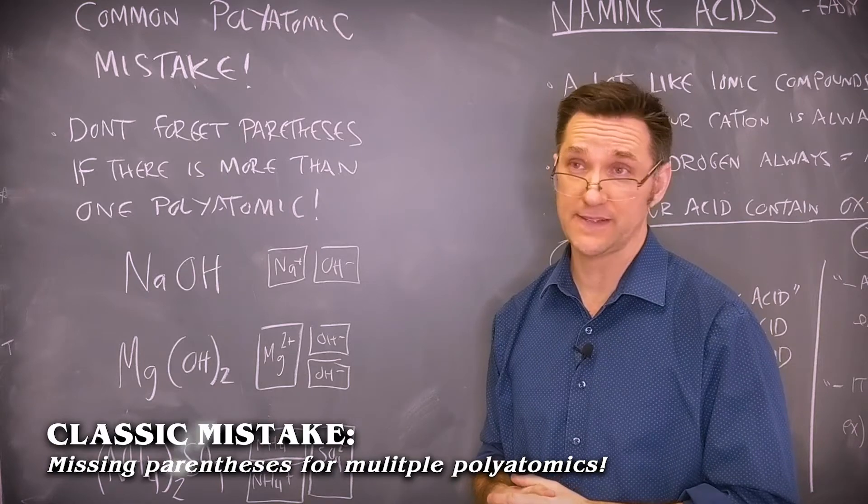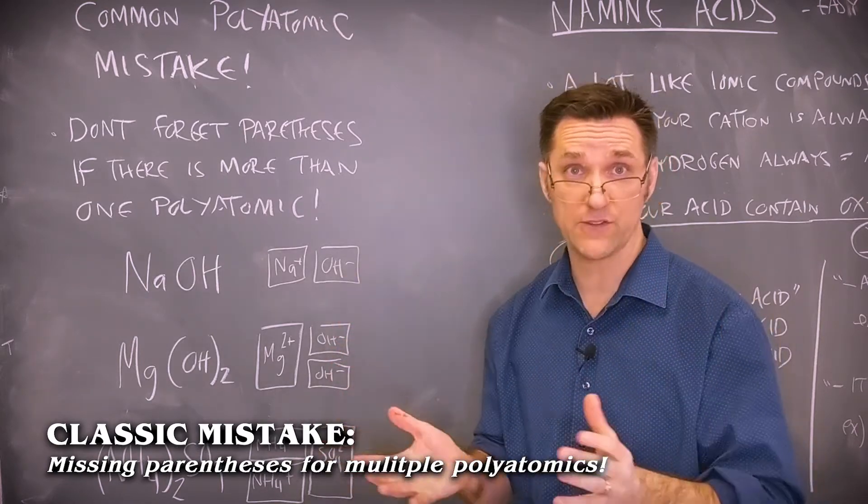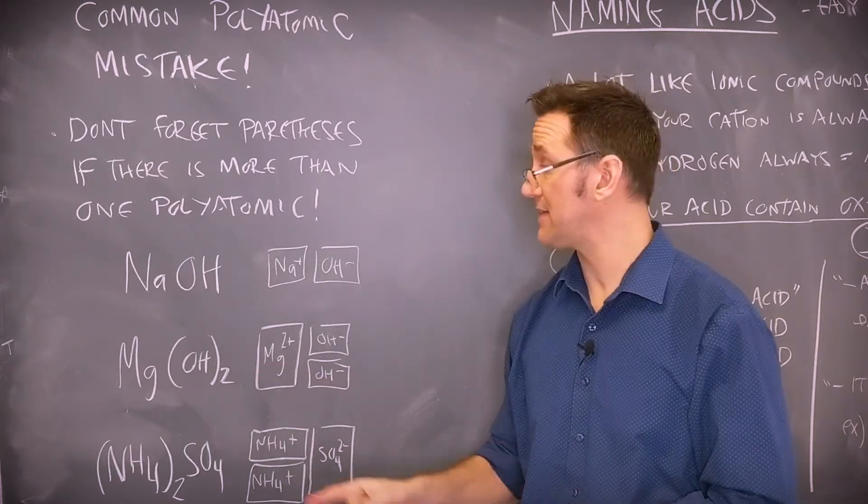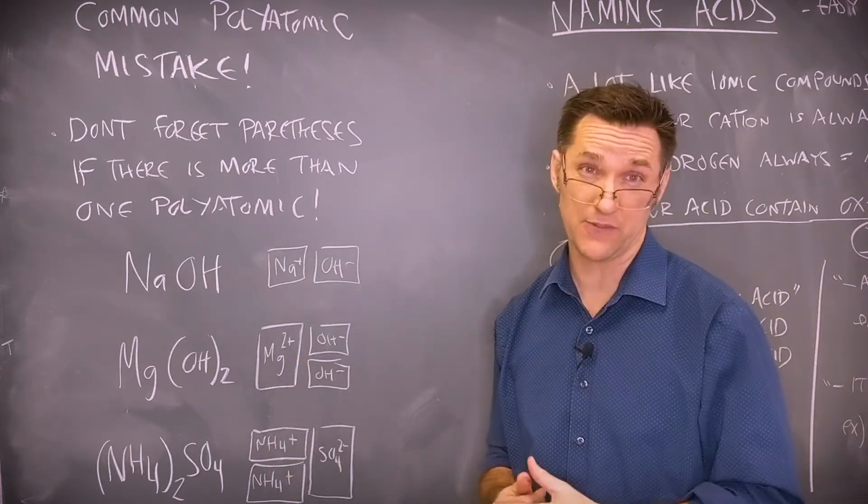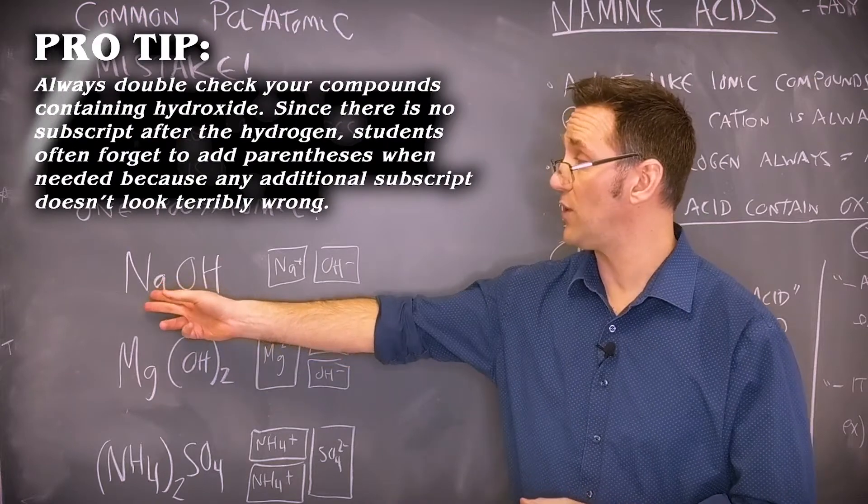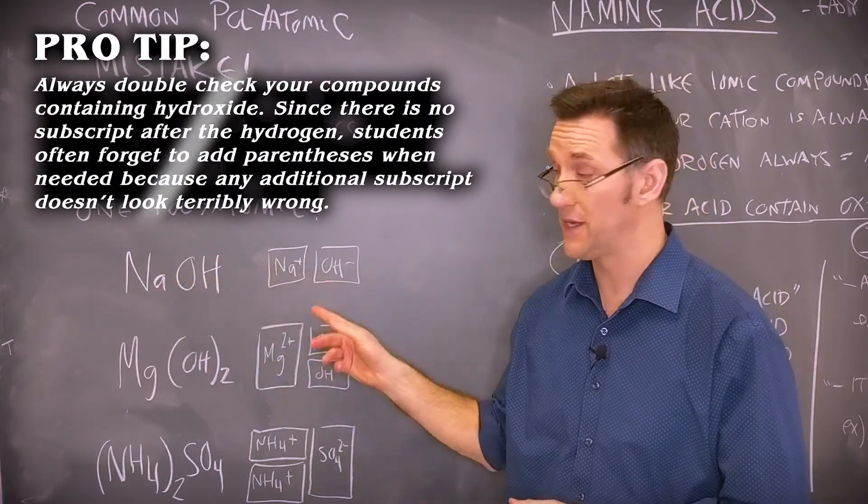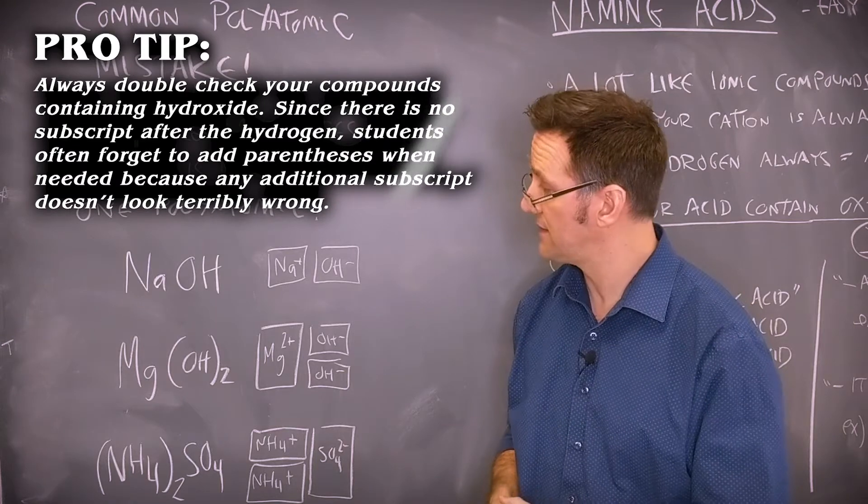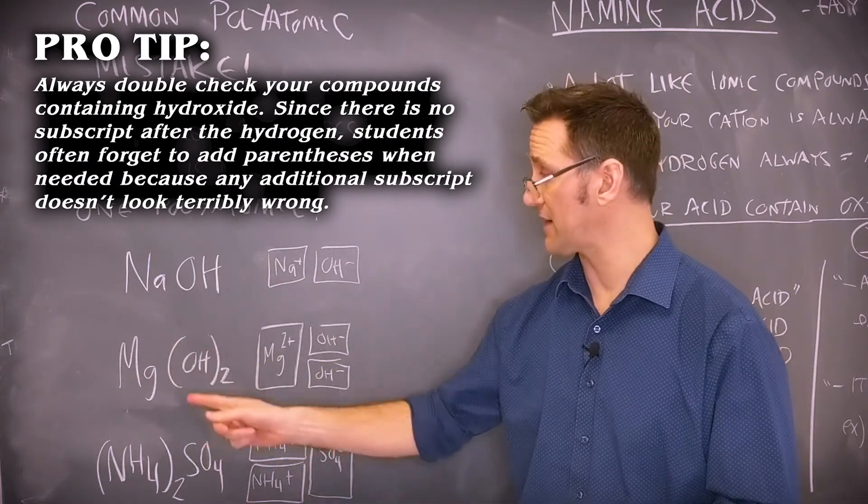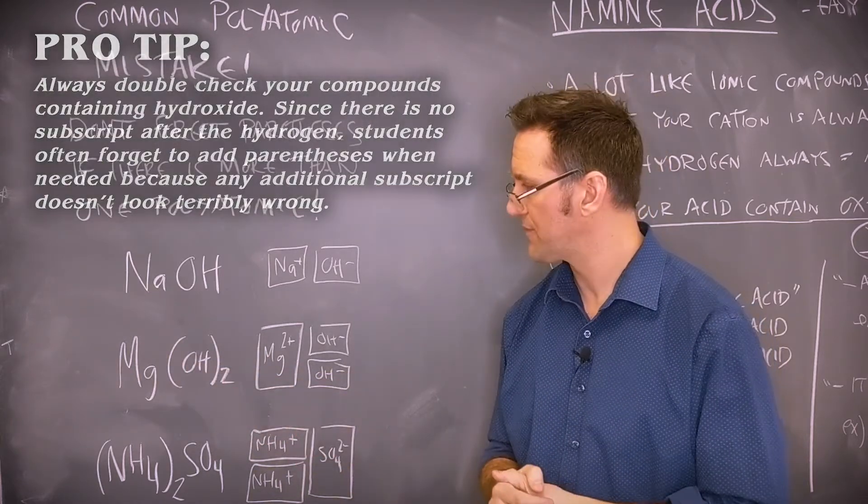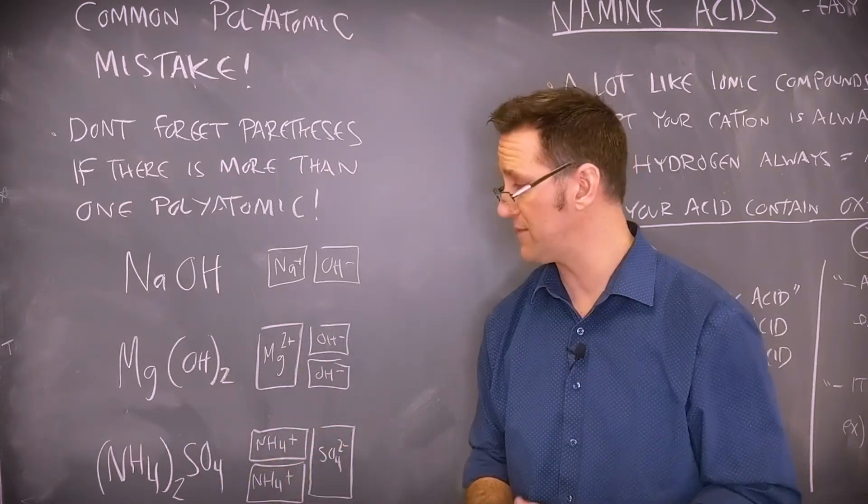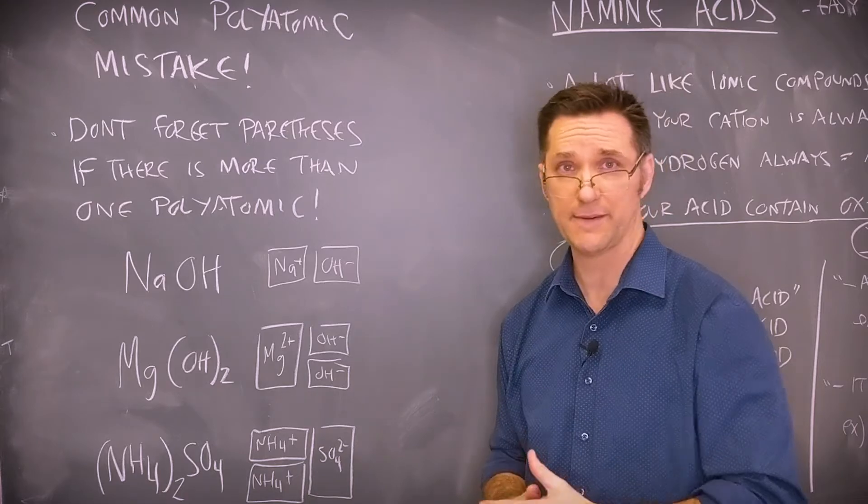Listen, there's one mistake students always do with polyatomics, and that's forget parentheses when they're needed. We want to make sure that when we're adding new subscripts, the new subscripts don't get confused with the subscripts that are already there. So for instance, magnesium hydroxide, I have two hydroxides, and so I need parentheses there. Without those parentheses, it looks like OH2, and that's not what we want to see.